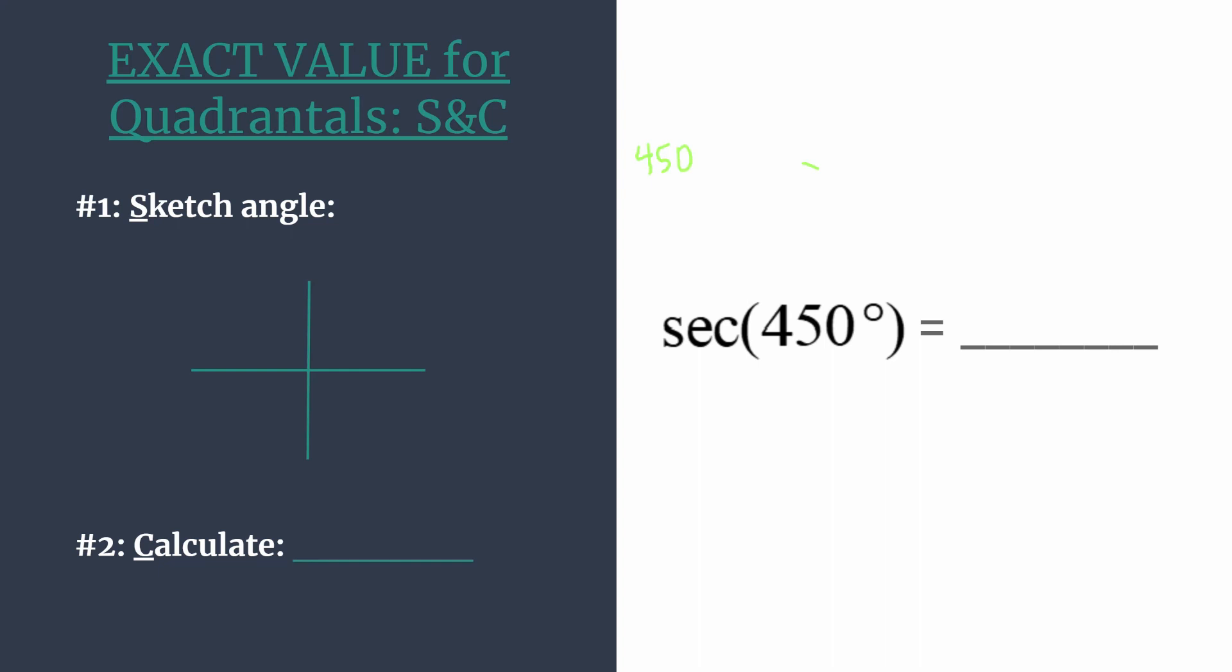We're just going to subtract 360 from 450. Anytime you want to find a coterminal angle, either subtract 360 or add 360 if that works for your situation, as long as you're in degrees. We have a result of 90 degrees, and we can say that 90 and 450 degrees are coterminal - they share the same terminal side.